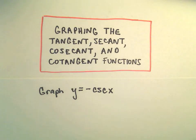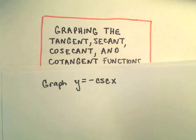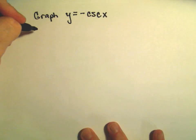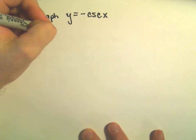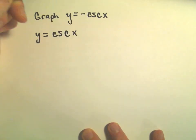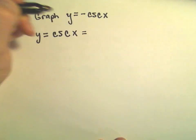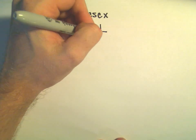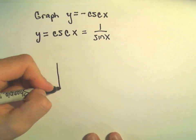In this video, I'm going to do the graph of y equals negative cosecant x. But to graph that, I'm actually first going to graph y equals cosecant x. And to actually graph cosecant x, remember the definition of cosecant x is 1 over sine x, so I'm actually going to graph sine x first.